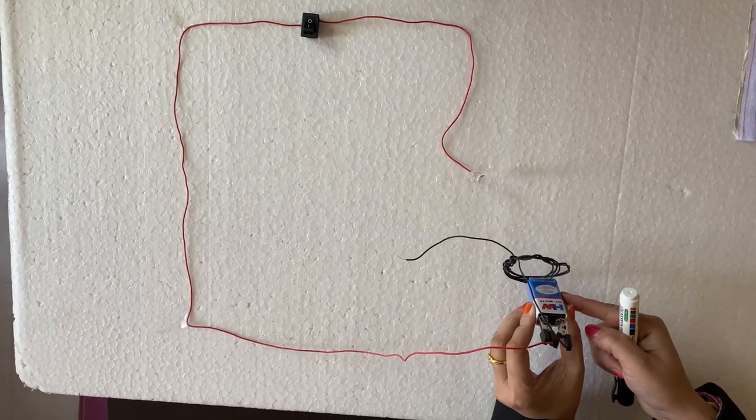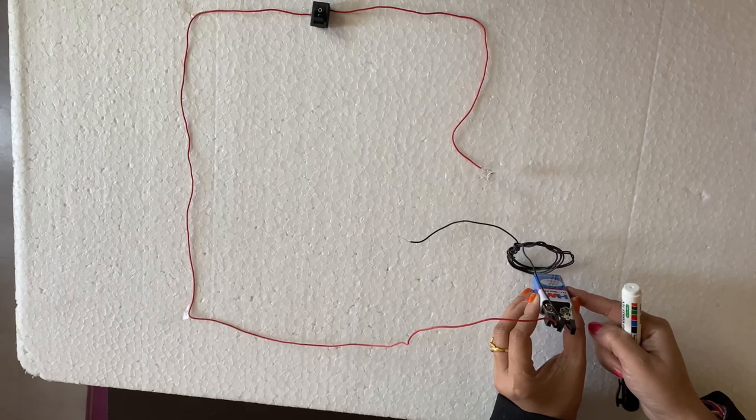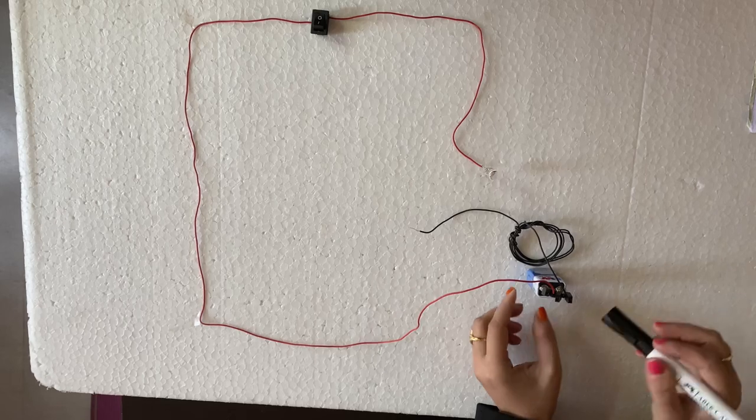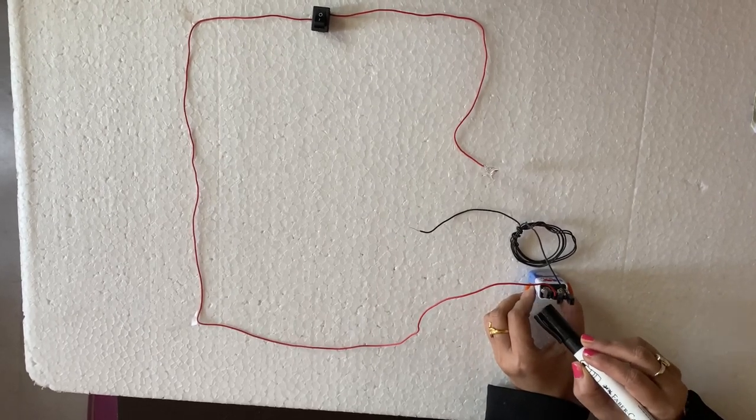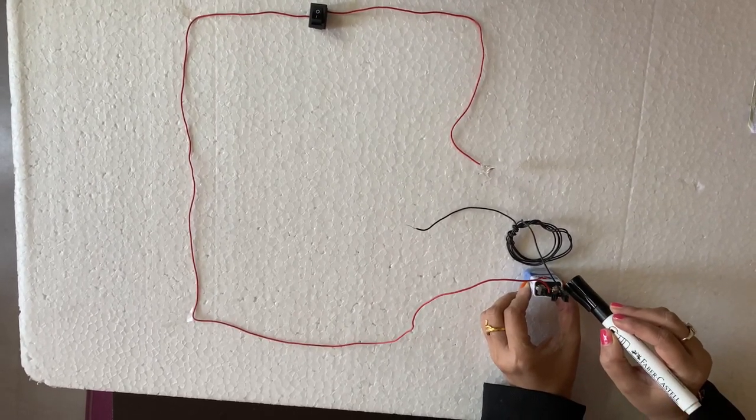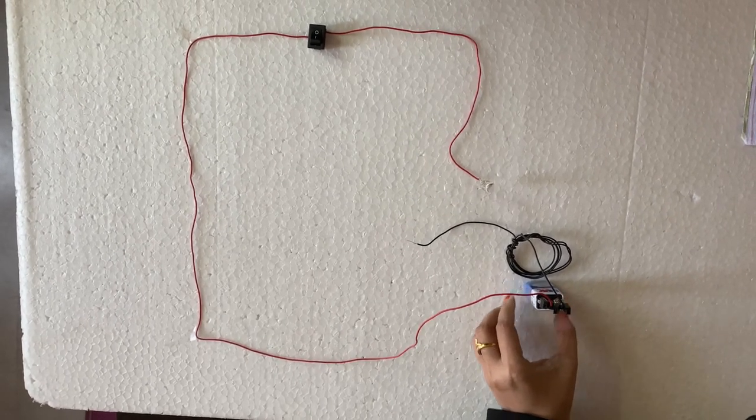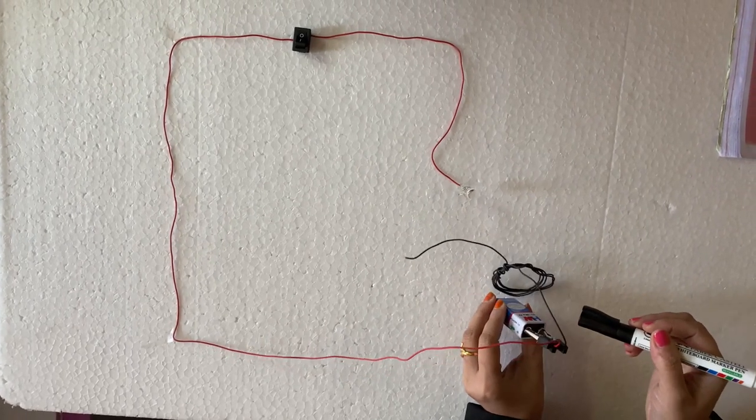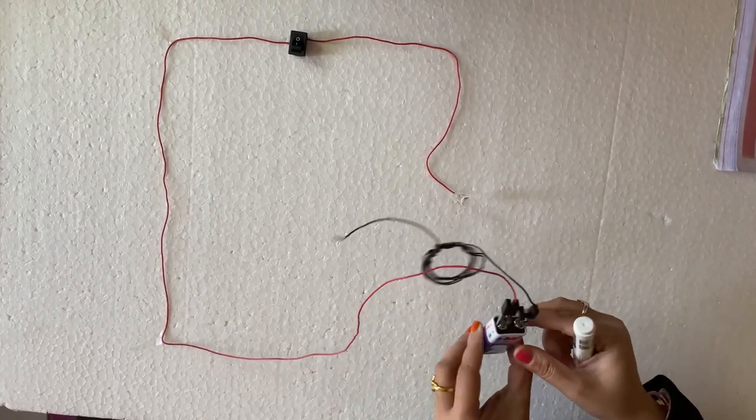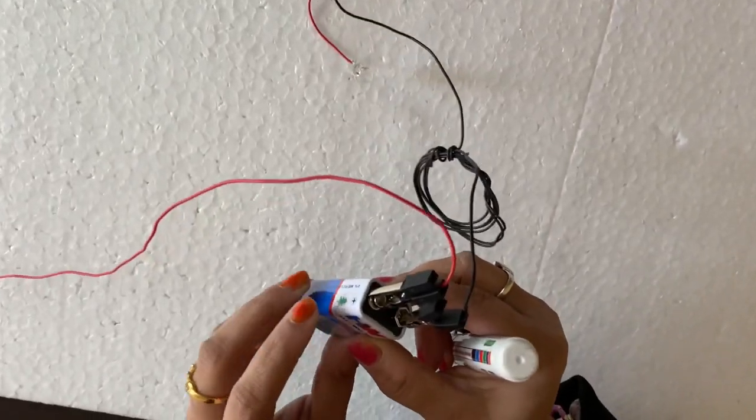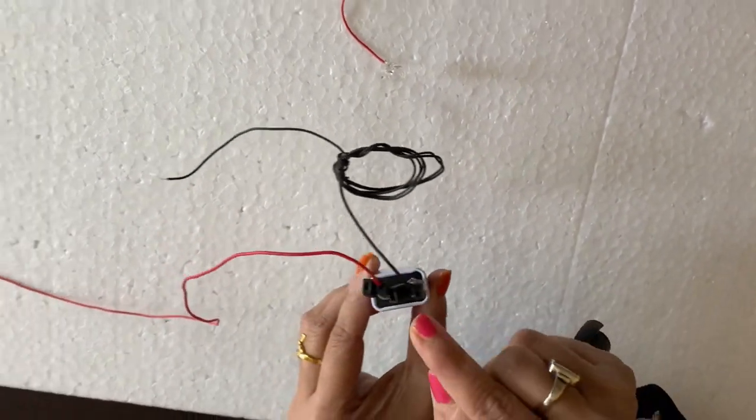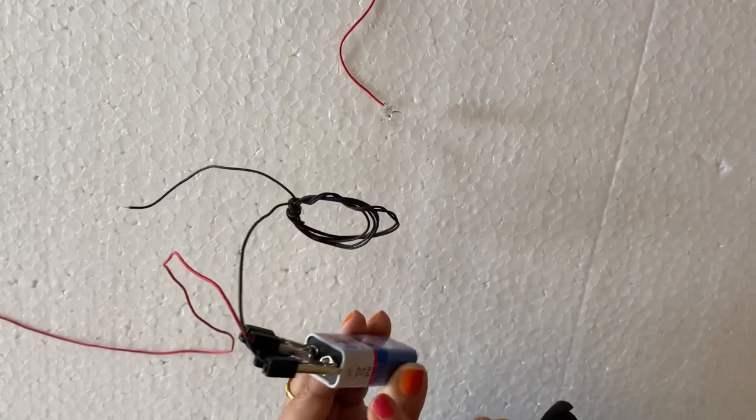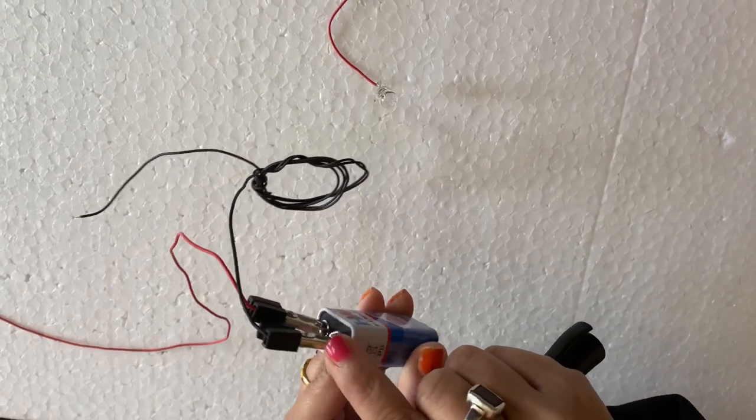You can see electric cell produces electricity from the chemicals stored inside it. And here two wires are there, one is connected from positive terminal and another is from negative terminal. Yes students, electric cell has two terminals, one is positive and another one is negative. Here you can see the sign, one is positive and another one is negative, and our two wires here, one is connected from positive terminal and another one is connected from negative terminal.